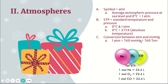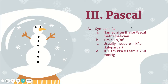Pascal is another way we measure pressure — the symbol is Pa — however, we typically use kilopascals, kPa, as our unit, because a pascal is very large compared to atm. One pascal equals one Newton per meter squared; it was actually created by a mathematician, not a scientist. We use it less often than atm or millimeters of mercury, but we do use it. The conversion is 101.325 kPa equals one atm.